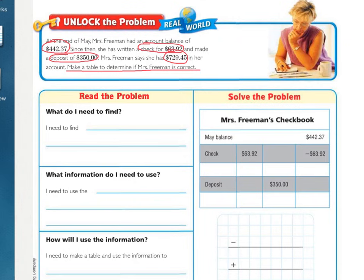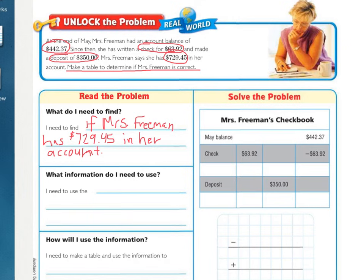Now we are going to use our graphic organizer — this big rectangle — and fill out the information. The first question is: what do I need to find? We already underlined that. So finish the sentence: I need to find... You should have written something along the lines of: I need to find if Mrs. Freeman has $729.45 in her account.